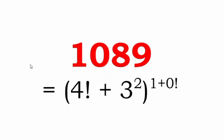Now, factorial. Recall that 4 factorial equals 4 into 3 into 2 into 1 which equals 24, and 0 factorial equals 1. This representation involves both exponentiation and factorial: 4 factorial plus 3 squared, whole to the power of 1 plus 0 factorial. Since 1 plus 0 factorial equals 2, this representation contains both factorial and exponentiation.